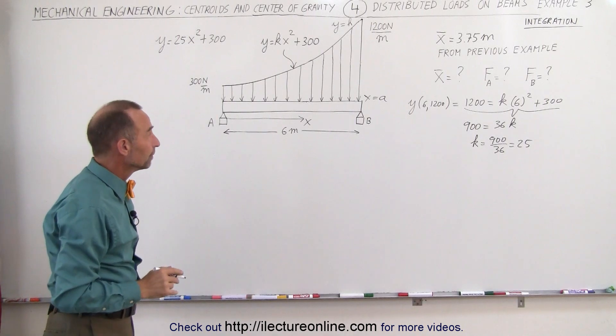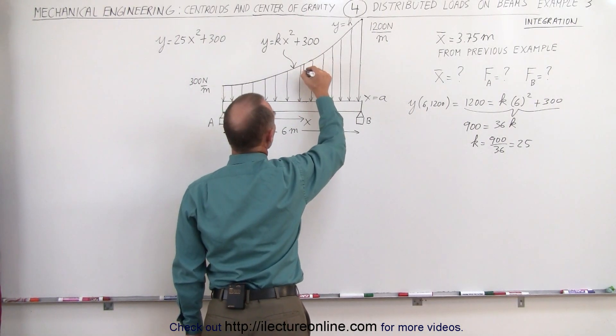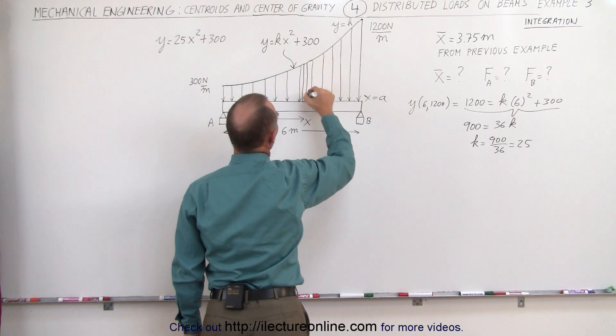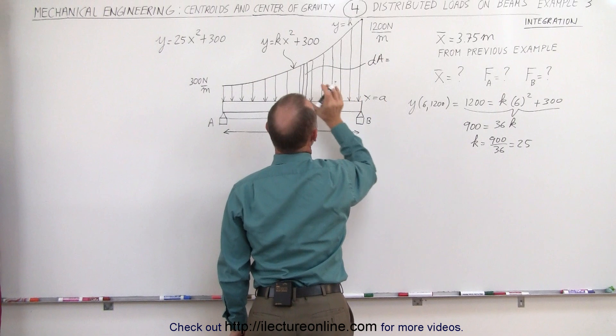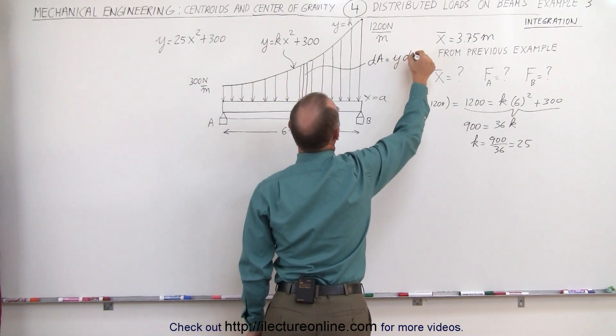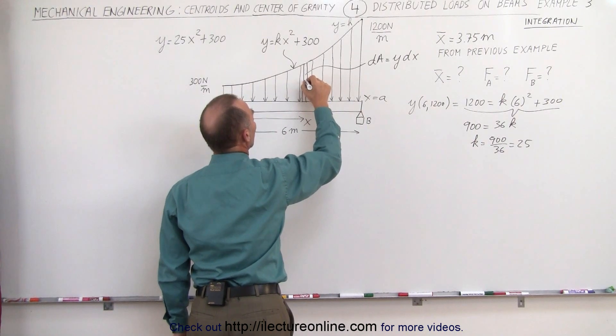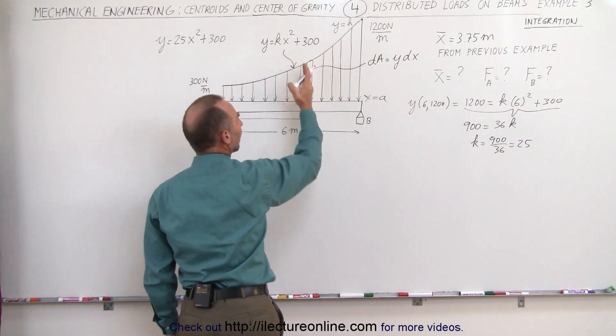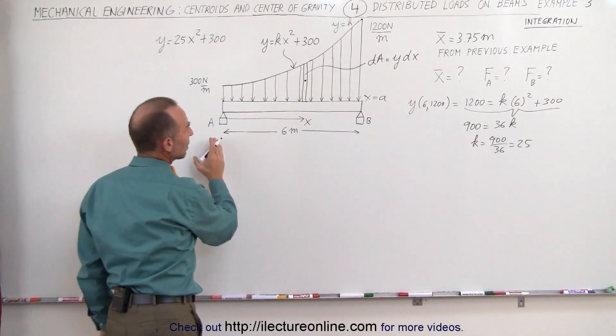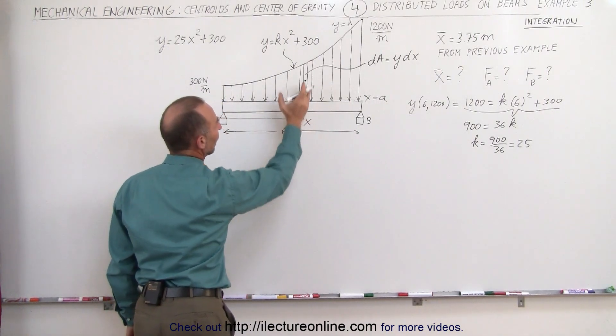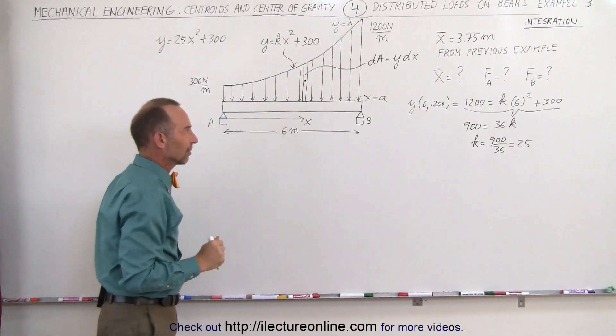Now we need to find the centroid. To do that, we find a small little segment on the beam. We call that a small little dA. That dA will be equal to the height which is y times the width which is dx and the centroid of that small region would be right in the middle. We don't care about the height but we do care about the distance away from the support point A right here. That would be distance x away. So the x coordinate of the centroid of the small little dA is equal to x.